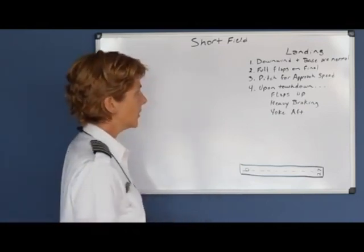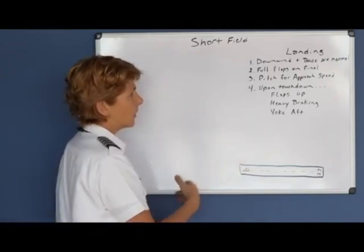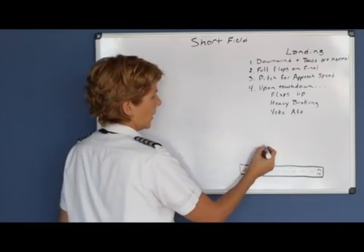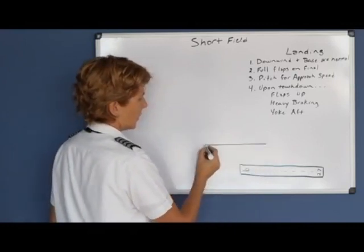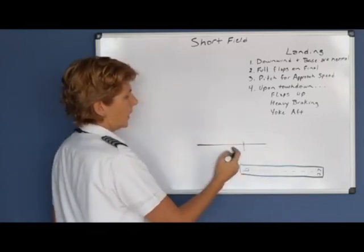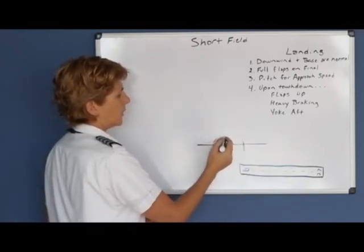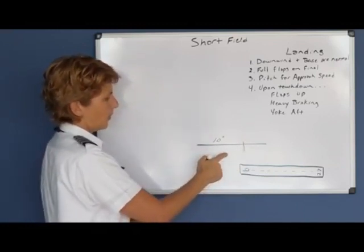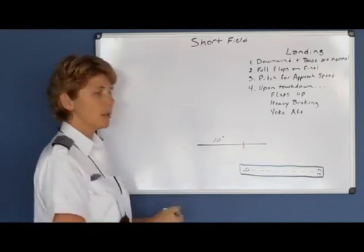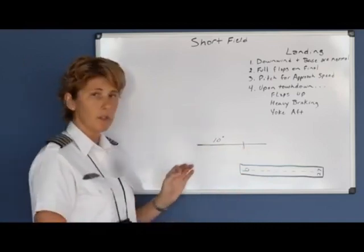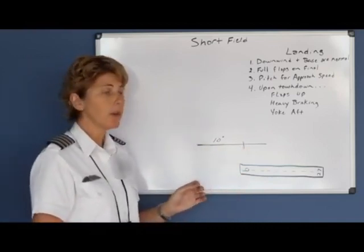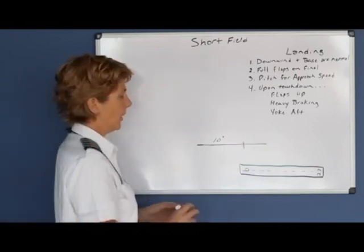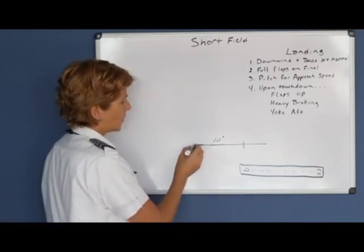Your downwind and base are basically normal. On your downwind, you will still start configuring the numbers and usually use about 10 degrees of flaps. The Airplane Flying Handbook says you may want to extend your downwind just a little bit more, which gives you more time to set up for a nice stabilized approach on final — but it's really optional.